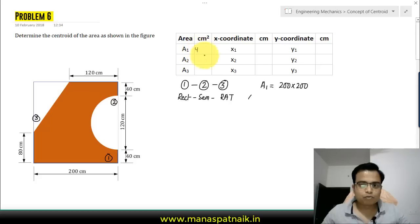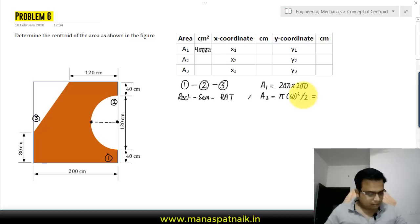A2 essentially is the area of this semicircle. If you watch carefully, this is the radius. It's half of the diameter. Diameter is 120 so the radius is 60. So it's going to be π times 60 squared divided by 2, and that should work out as 5654.87.